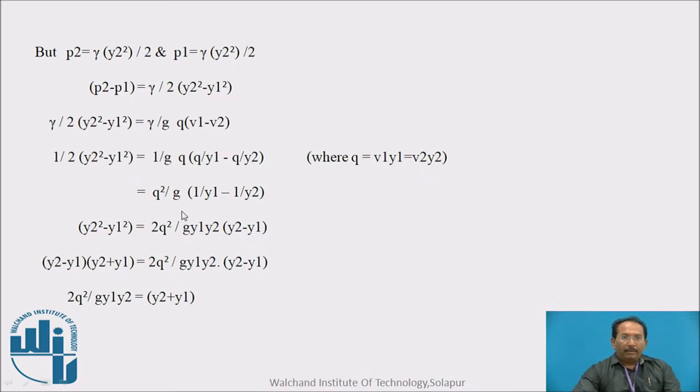We get q square upon g into bracket 1 upon y1 minus 1 upon y2. Again simplifying, we will get this is a very important equation, equation 2q square upon g y1 y2 is equal to y2 plus y1. This is a very important equation we got, and we are going to insert this particular equation in the main equation of hydraulic jump. Just remember this equation once again, 2q square upon g y1 y2 is equal to y2 plus y1. You can write this equation on the top of your page also.